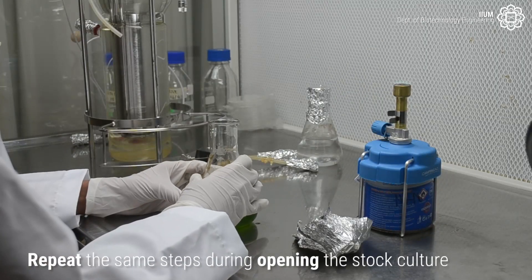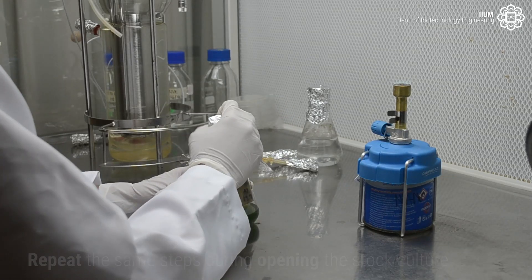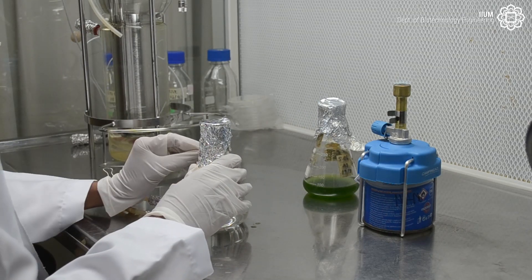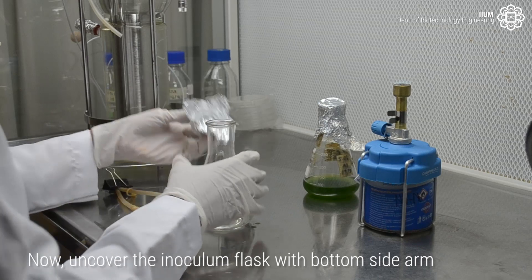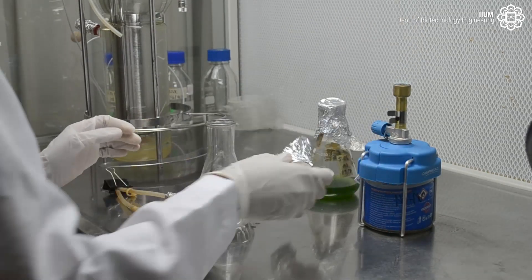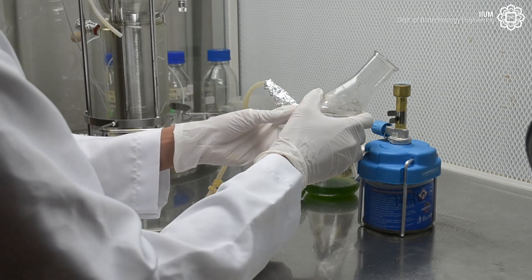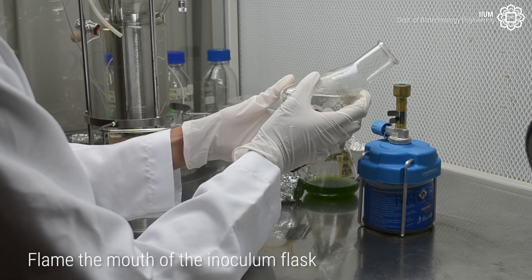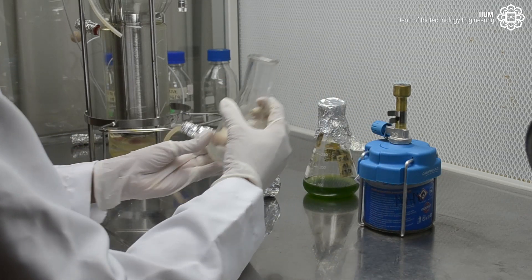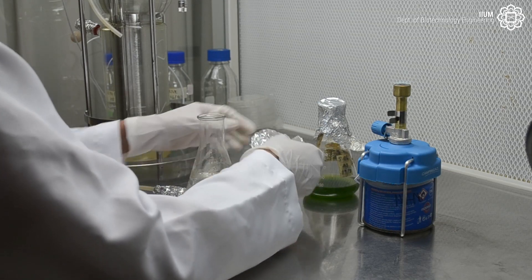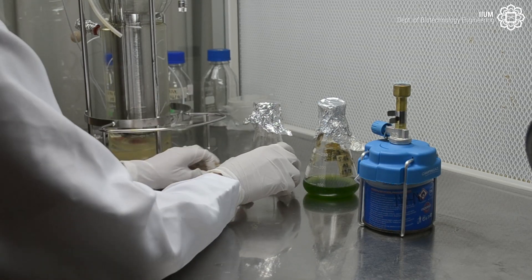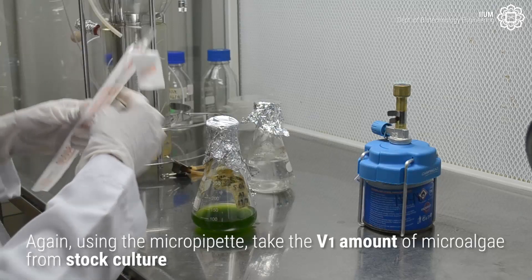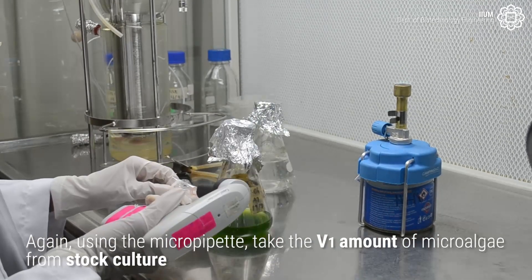Repeat the same steps from opening the stock culture. Now uncover the inoculum flask with bottom sidearm. Flame the mouth of the inoculum flask. Again, using the micropipette, take the V1 amount of microalgae from stock culture.